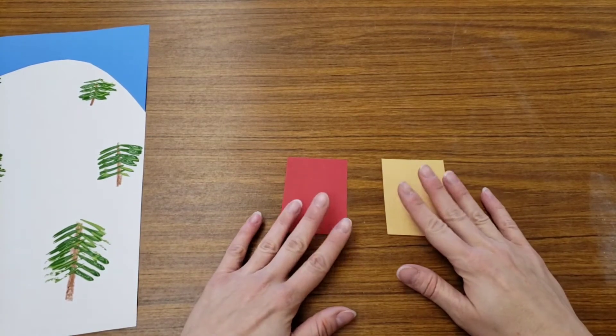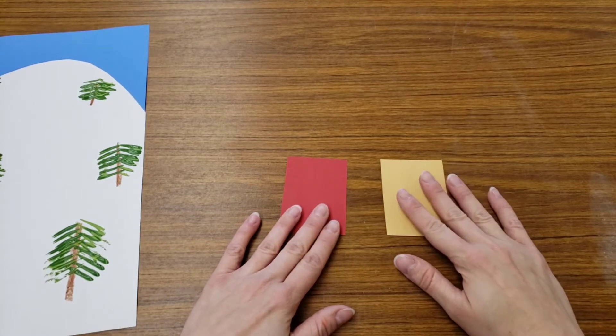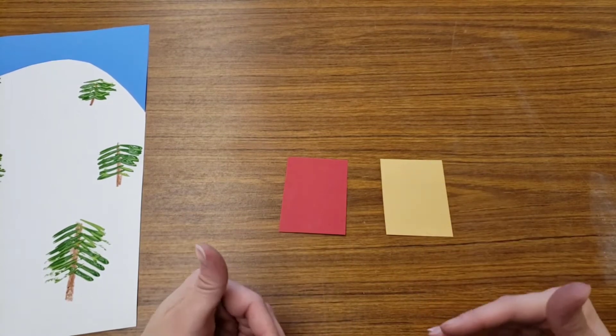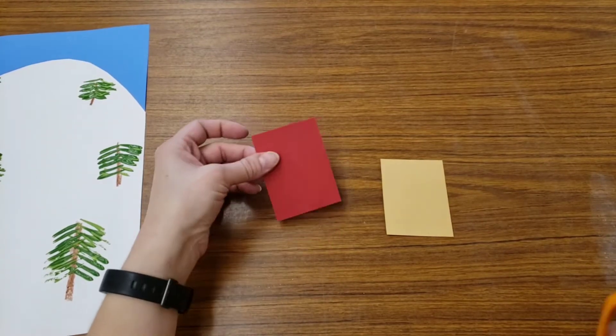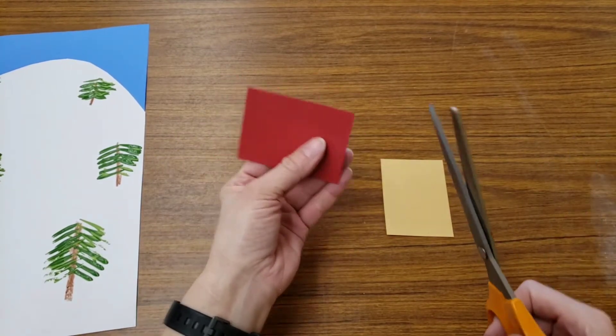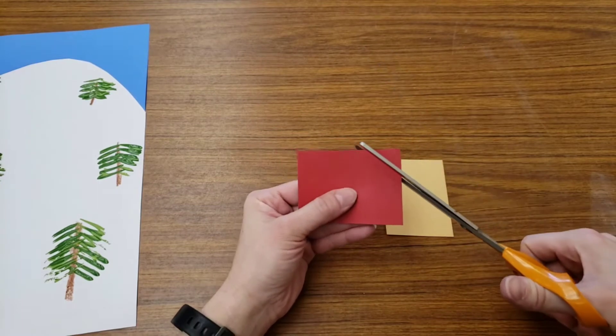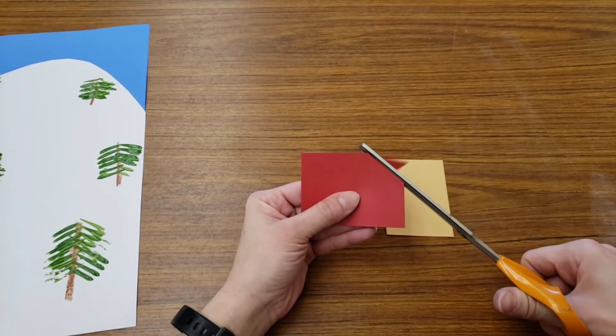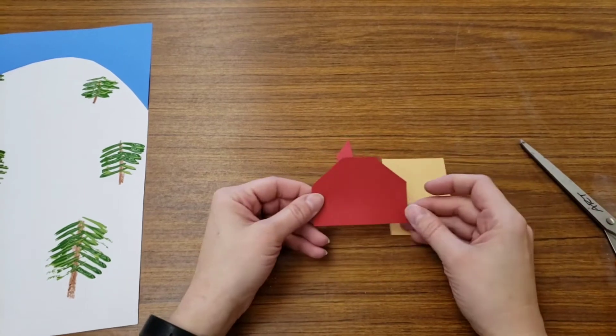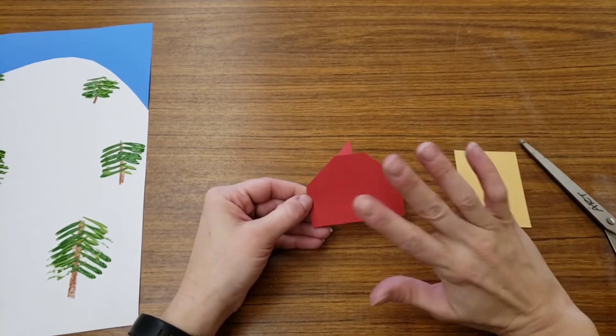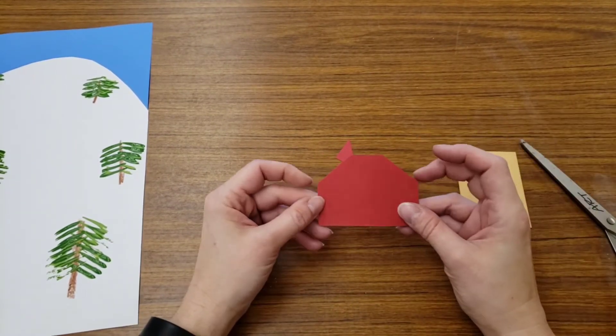We're going to turn these two pieces of paper into houses. One will be up close, one will be far away. So pick a direction for your piece of paper and I'm going to cut off the top corners. That's it. I didn't cut the bottom corners, I didn't cut anywhere else, just the top two corners.